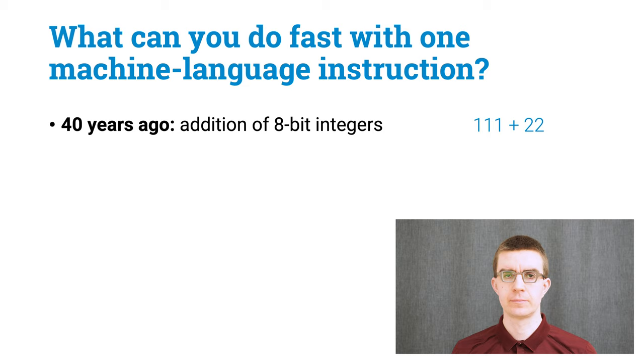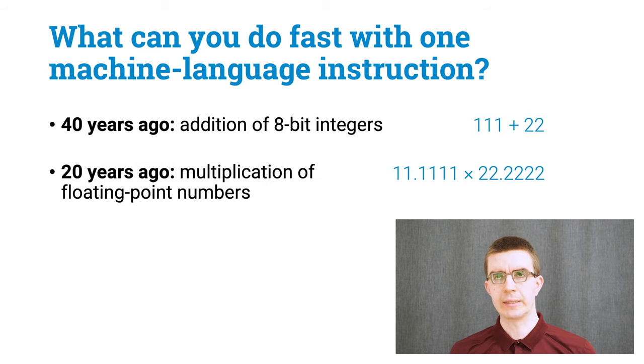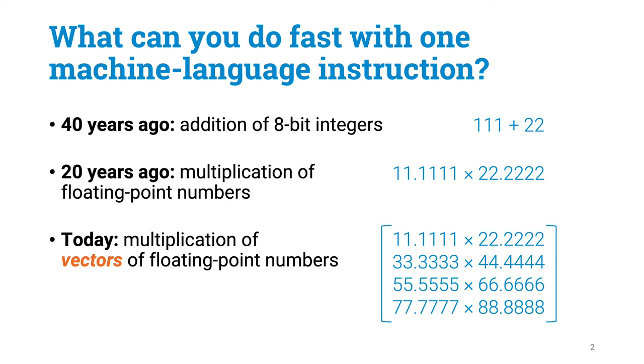CPUs execute machine language instructions, but what can you do quickly with just one instruction? Some 40 years ago you were maybe able to calculate the sum of two small integers. Some 20 years ago you were able to do more complicated operations, such as the multiplication of floating-point numbers.